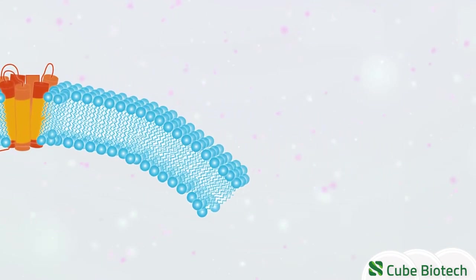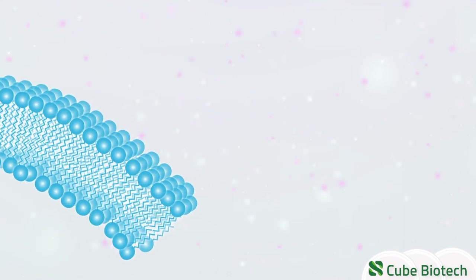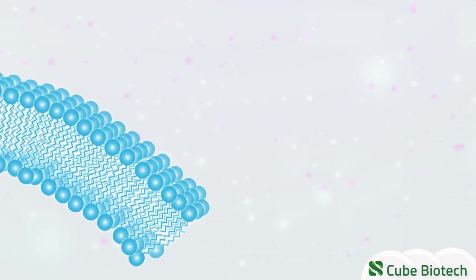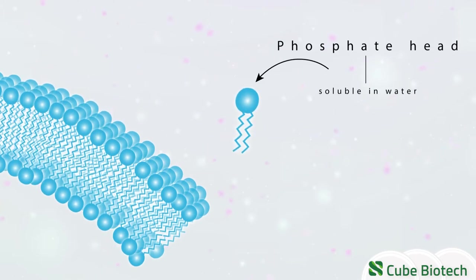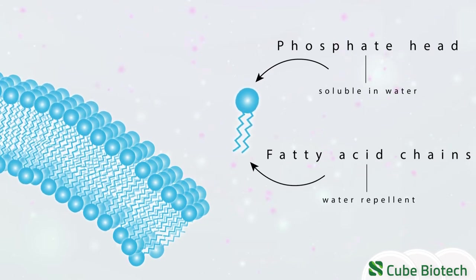The reason for this can be found in the structure of the cell membrane. This consists of a lipid bilayer which is made up of two rows of phospholipids. Each phospholipid consists of a phosphate head which is hydrophilic, linked to two fatty acid chains that are hydrophobic.